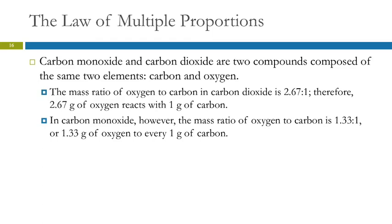So let's look at an example. So carbon monoxide and carbon dioxide. Two compounds composed from the same two elements, carbon and oxygen. The mass ratio of oxygen to carbon in carbon dioxide is 2.67 to 1. And in carbon monoxide, as we saw in our previous example, it's 1.33 to 1. So what the law of multiple proportions says is if we take the ratio of these two ratios, we'll get a small whole number.